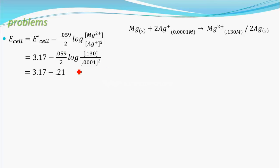When you simplify this whole term, you will get 0.21, and if you simplify again, you will get E cell as 2.96 volts. This is the E cell. That's it.